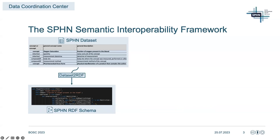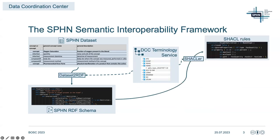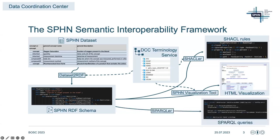In addition, the DCC has developed several tools for automating the generation of RDF files for specific terminologies used for encoding values — for instance, with the DCC terminology service. Shackle rules for validating data against the schema definitions and restrictions with the Shackler. A human-readable documentation of the RDF schema with the SPHN visualization tool. And finally, SPARQL queries for basic statistics and data exploration possibilities with the Sparkler.